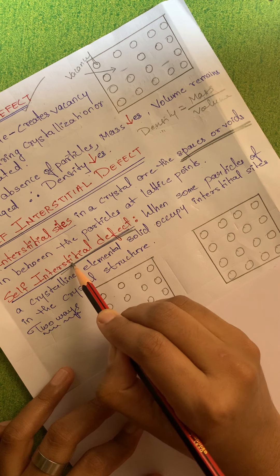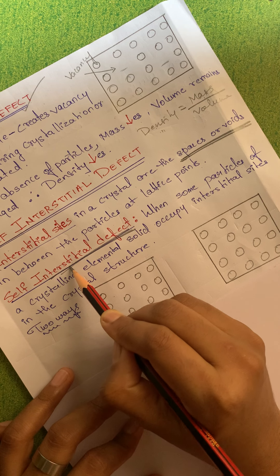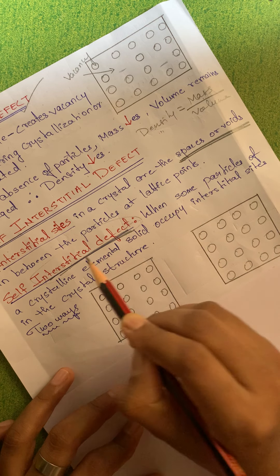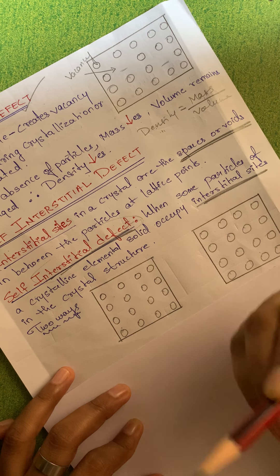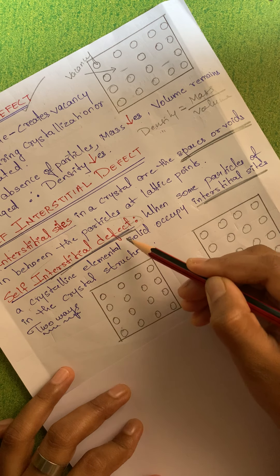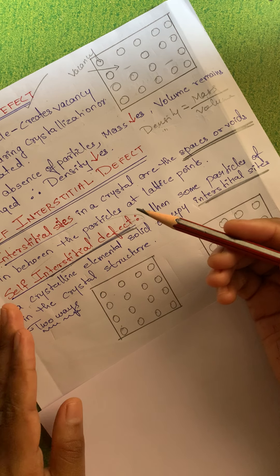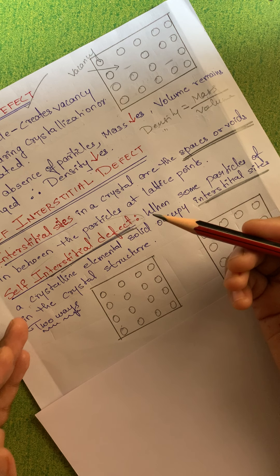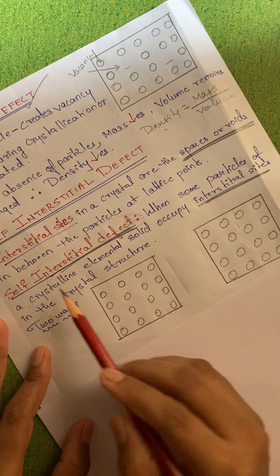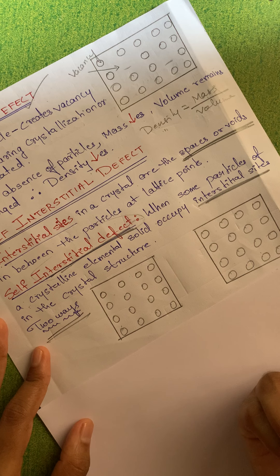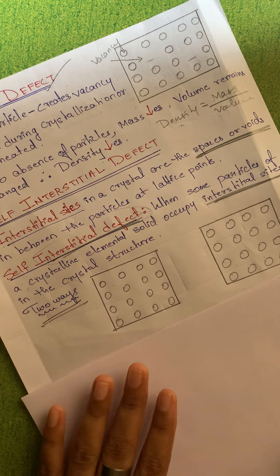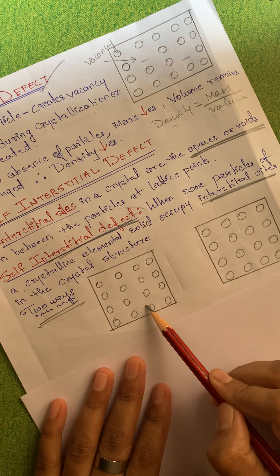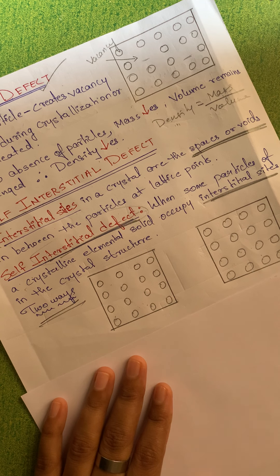The next type is self-interstitial defect. To understand it, we first need to know what interstitial sites are. Interstitial sites are nothing but the spaces or voids left after the formation of a crystal structure — the spaces in between the particles at lattice points. So interstitial sites are simply the spaces or voids in a crystal.